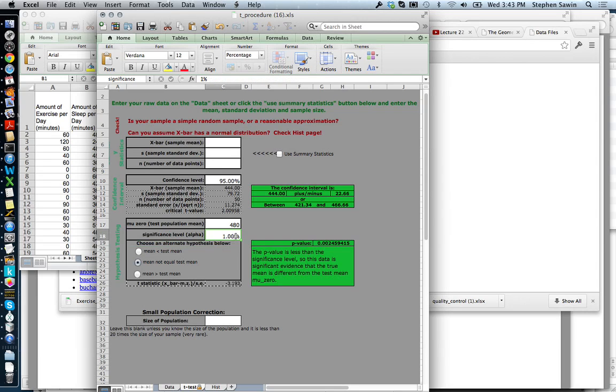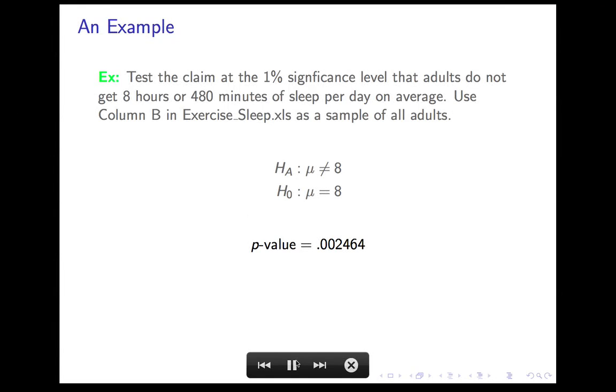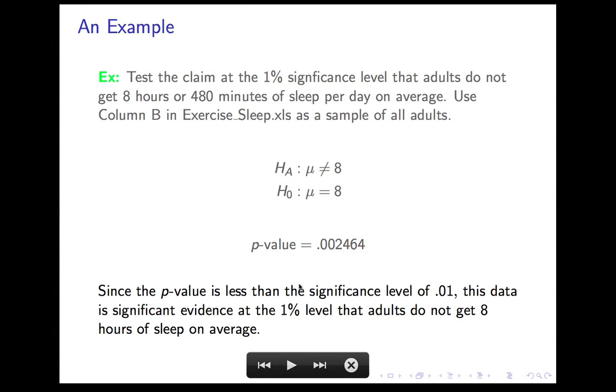The only thing you get by entering the significance level in is here it will report the significance, which is usually not difficult. It reports it in the correct form, except, of course, it does not know what the mean and test mean represent. So you still have to translate it into real English. So here's our p-value, 0.002. So let's return. That p-value is less than the significance level, so we report this data is significant evidence at the 1% level that adults do not get 8 hours of sleep on average.